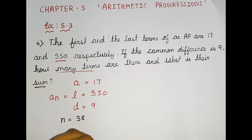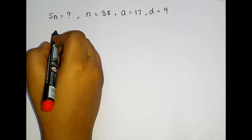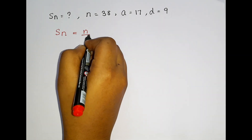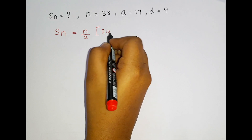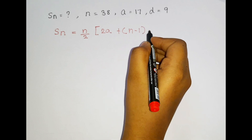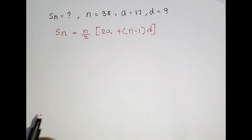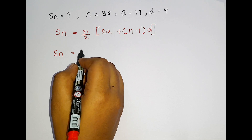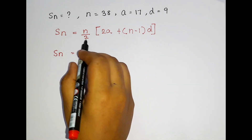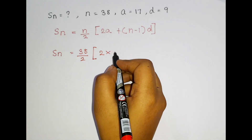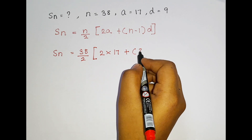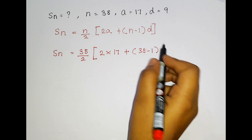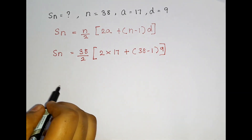Now I am supposed to find the sum. For that we have another formula, that is the SN formula. So the formula is SN = N/2 × [2A + (N−1) × D]. Now let us substitute the values: N = 38, divided by 2, and inside the bracket: 2 × A which is 17, plus (N−1) which is 38−1, times D which is 9.